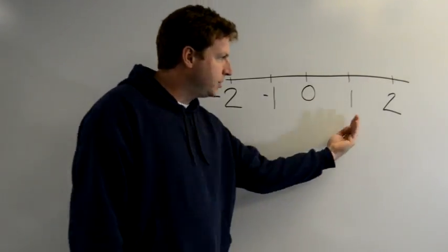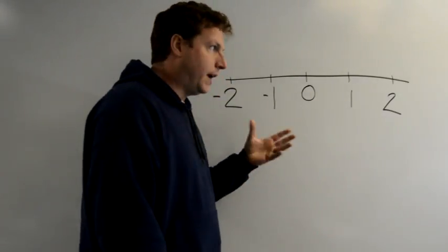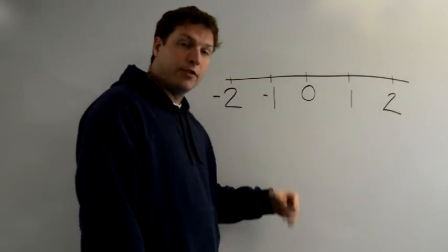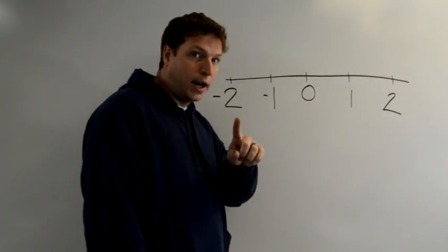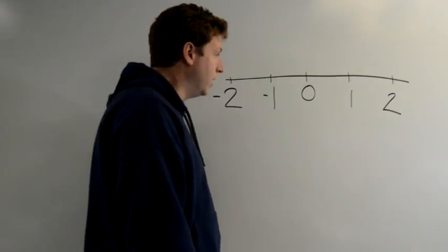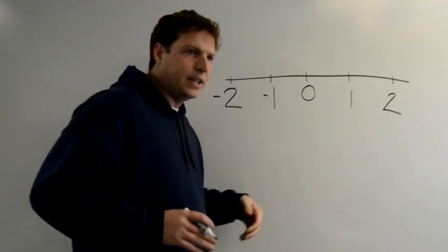So the absolute value of one is one. It's one unit from zero. And on the other side, negative one is still one unit from zero. So the absolute value of negative one is one. Same with two. One, two places from zero. So the absolute value is always positive. It's the distance from zero.